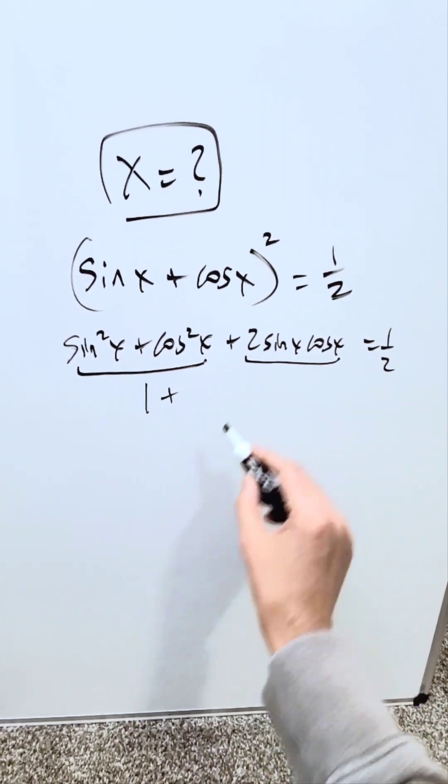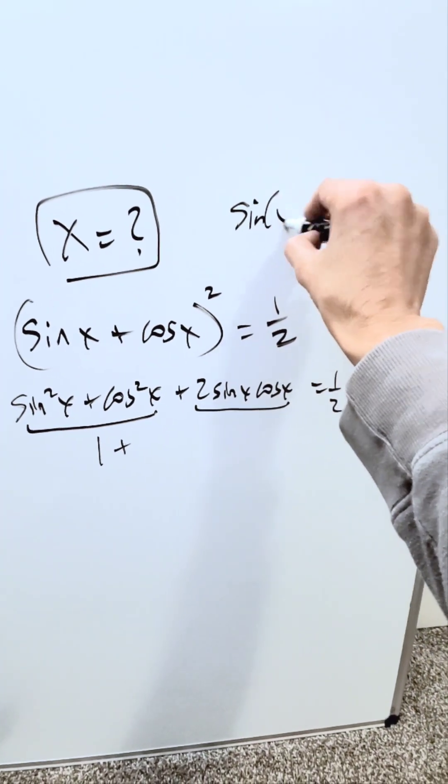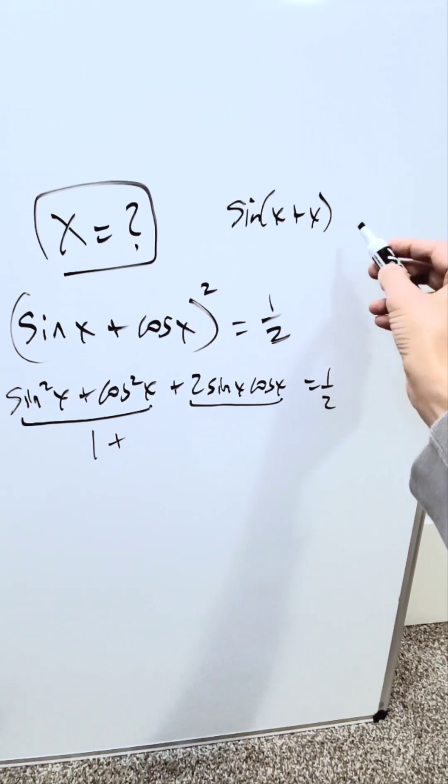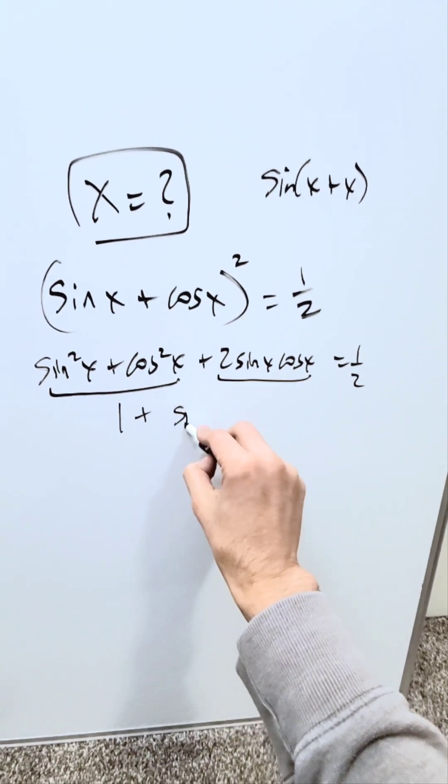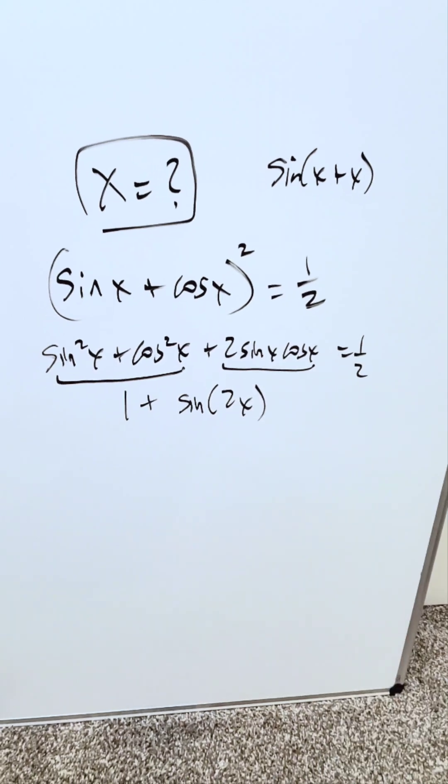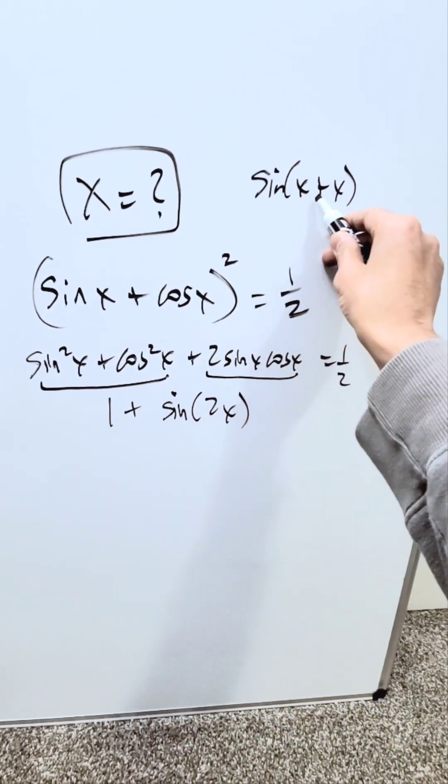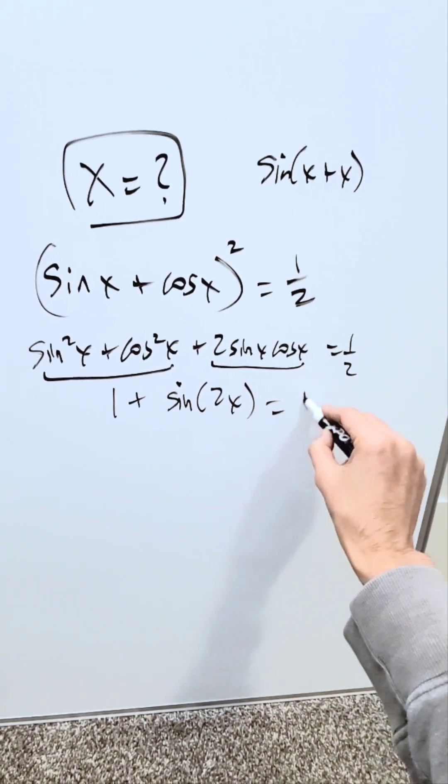There's another identity for this. If you were to look at 2 sine x cosine x, you compute this. It's no different than sine 2x. And meaning you're looking here at sine 2x. That right there is coming from your sine sum formula, equal to 1 over 2.